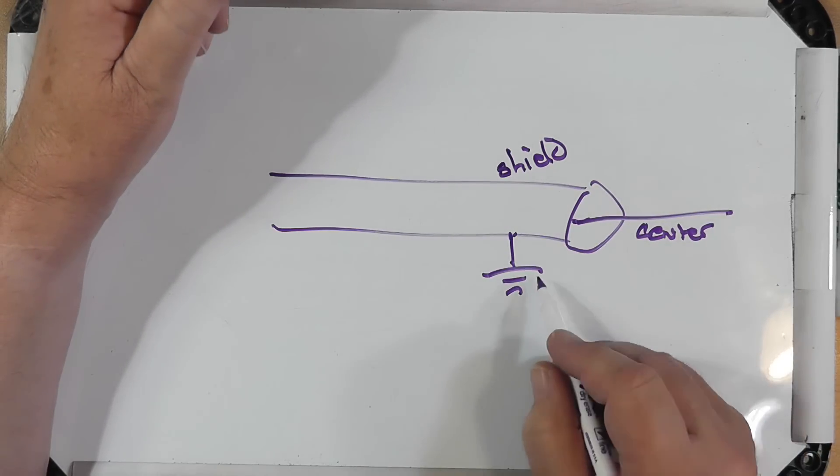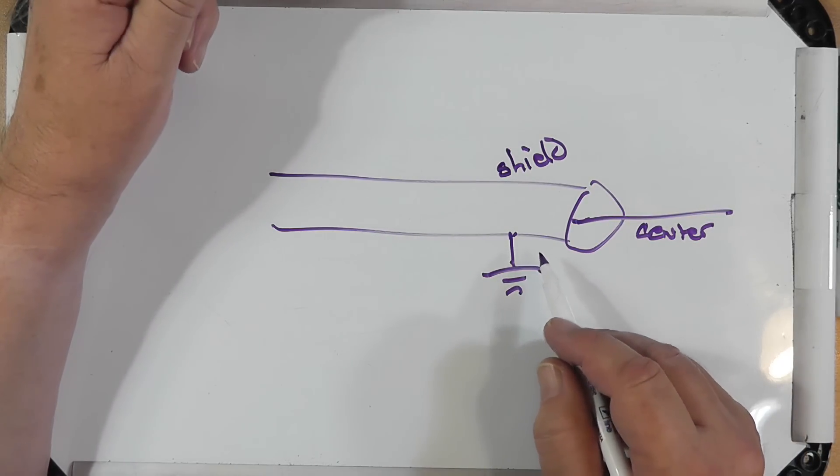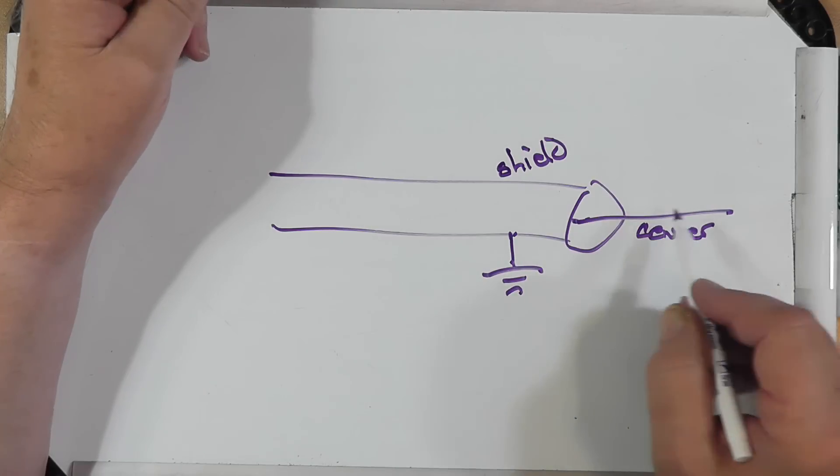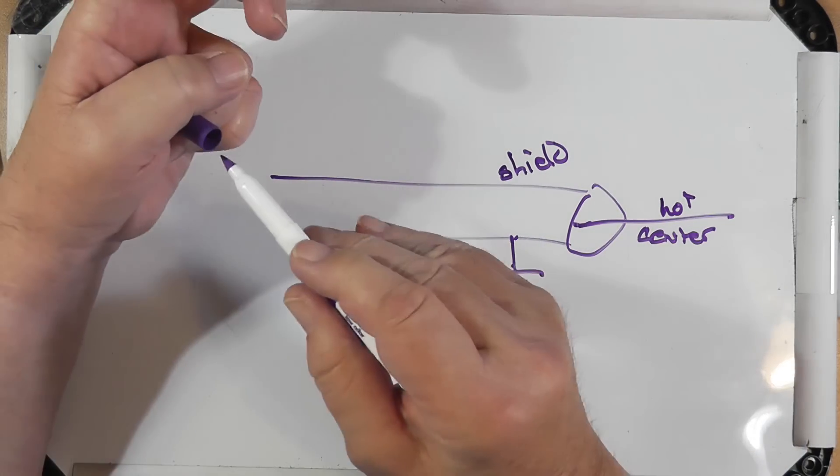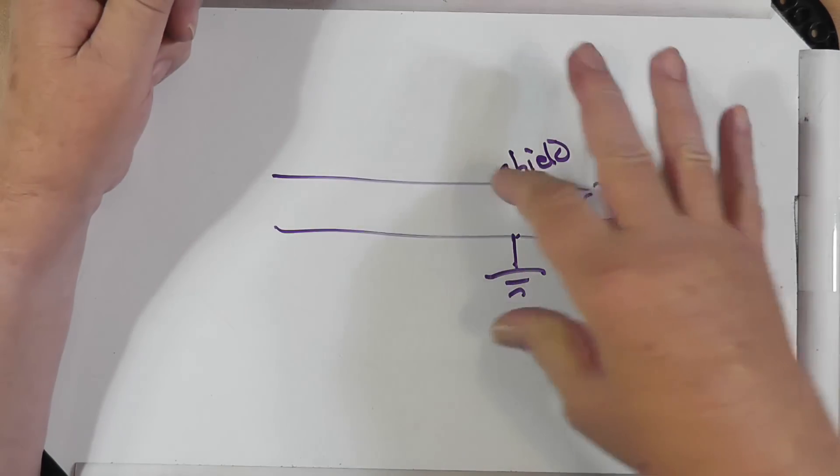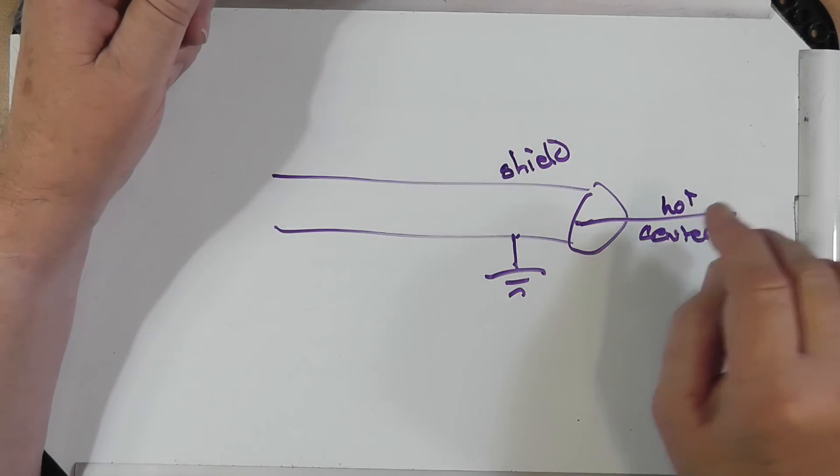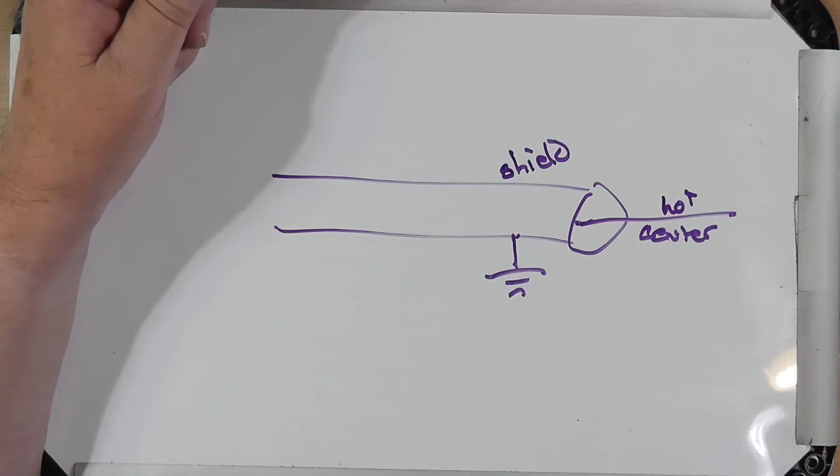So it's not the neutral. It's ground. And the center is what you could have called the hot if you wanted to. By the time you get out a bunch of feet away, it starts to get a little bit more balanced.